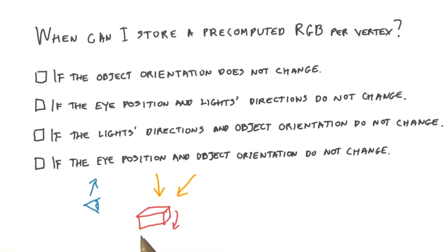In the first answer, the object does not move. This means the object's normals are the same each frame, but lights can still move. If the lights move, the shade of the object will change, so we can rule out this answer.